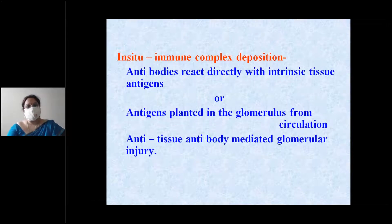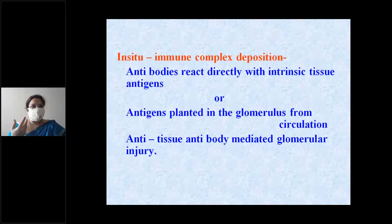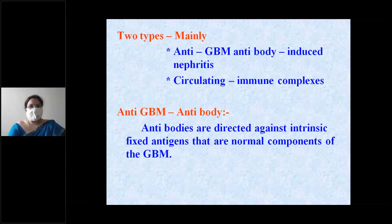Anti-tissue antibody-mediated glomerular injury occurs when any tissue within the glomerular structure evokes antibodies against it, causing anti-tissue antibody-mediated glomerular injury.